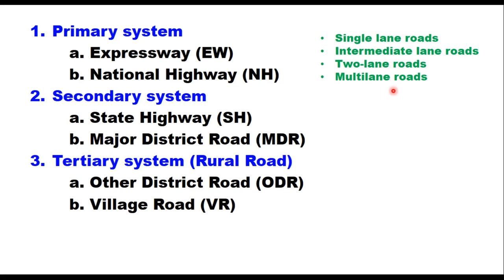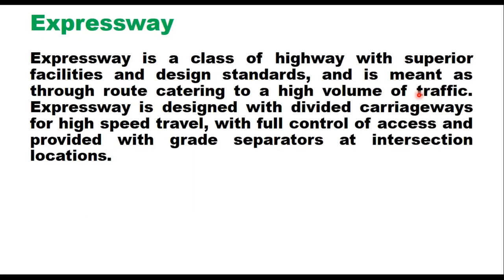In undivided roads, movement of traffic is in two directions without any physical segregation, whereas in multi-lane roads, traffic movement in two directions is segregated by a physical median or curbs. Expressway is the highest class of highway with superior facilities and design standards, and they are meant as through routes catering to a high volume of traffic.